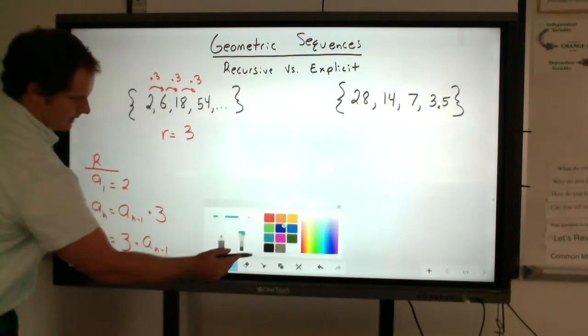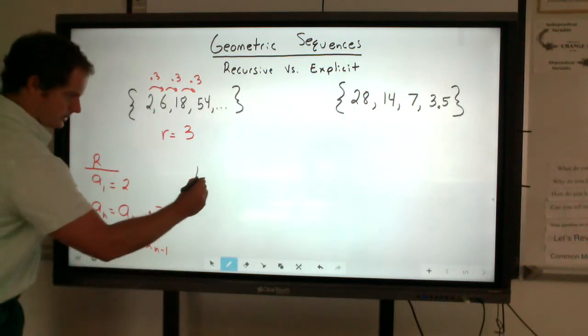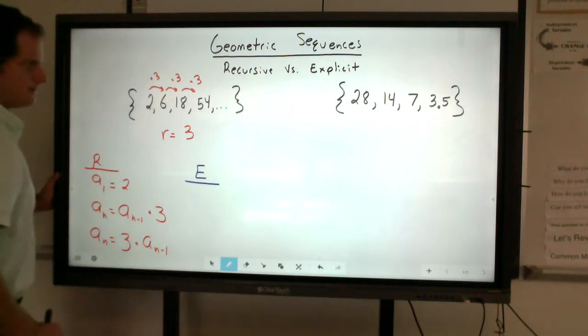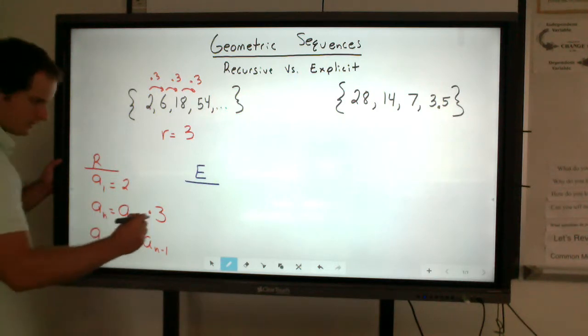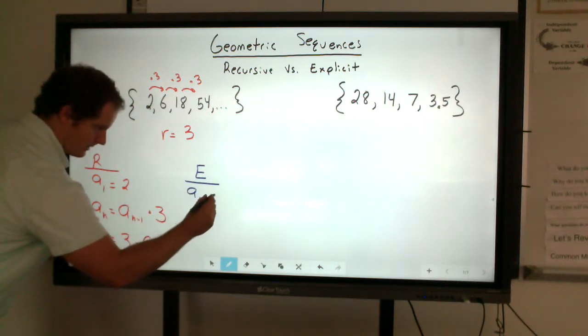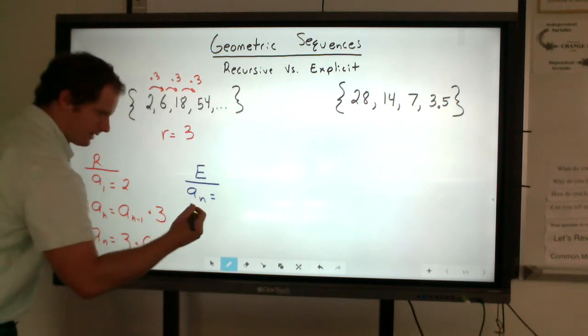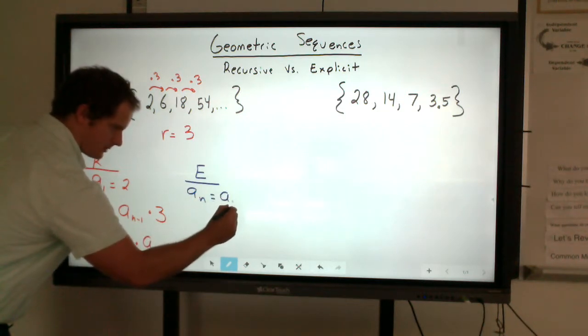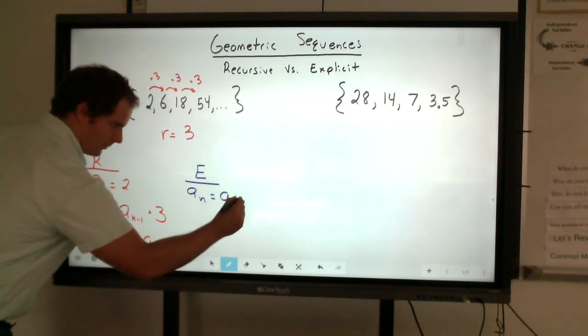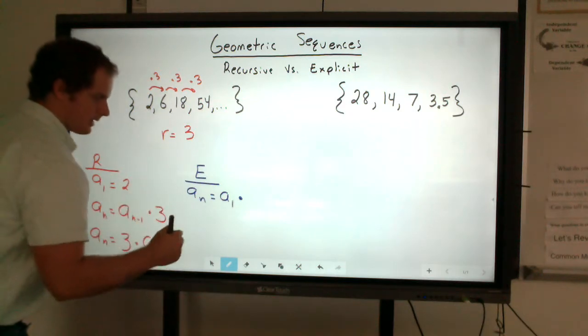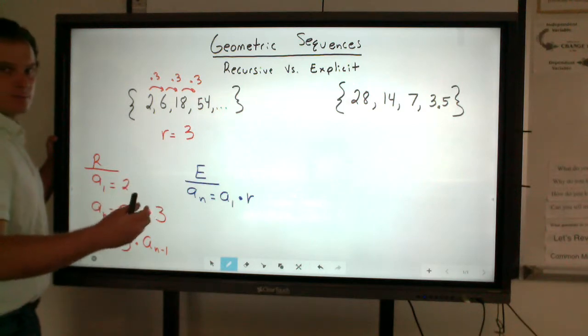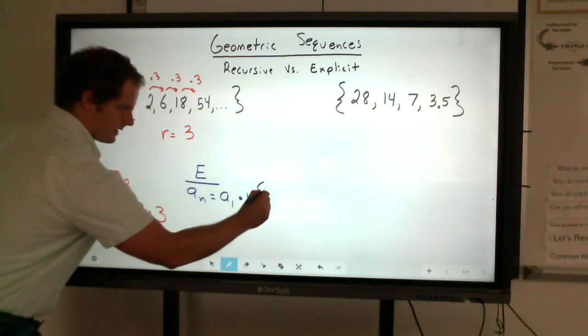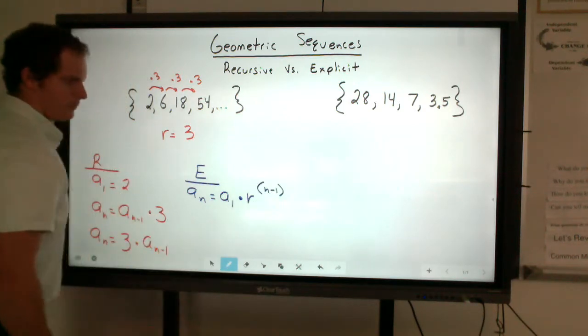Explicit is slightly different. So I'll just use an E to represent explicit. And for explicit, we're going to use the same idea of that a sub n of the nth term. But the way that this works is, like the recursive, we want to find that first term, but then we want to multiply it by our common ratio, and that common ratio is then raised to a certain power. And in this case, the power is that n minus 1, or that previous term.